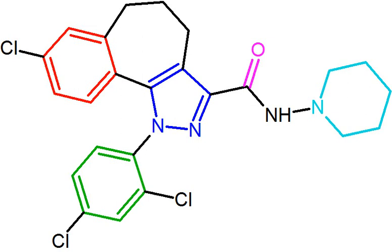Mechanism of action: CB1 receptors are coupled through G-proteins and inhibit adenylyl cyclase and activate mitogen-activated protein, MAP, kinase. In addition, CB1 receptors inhibit presynaptic N- and P/Q-type calcium channels and activate inwardly rectifying potassium channels. CB1 antagonists produce inverse cannabimimetic effects that are opposite in direction from those produced by agonists. CB1 receptors are highly expressed in hypothalamic areas involved in central food intake control and feeding behavior, strongly indicating that the cannabinoid system is directly involved in feeding regulation. These regions are also interconnected with the mesolimbic dopamine pathway, the so-called reward system. Therefore, CB1 antagonists might indirectly inhibit the dopamine-mediated rewarding properties of food.